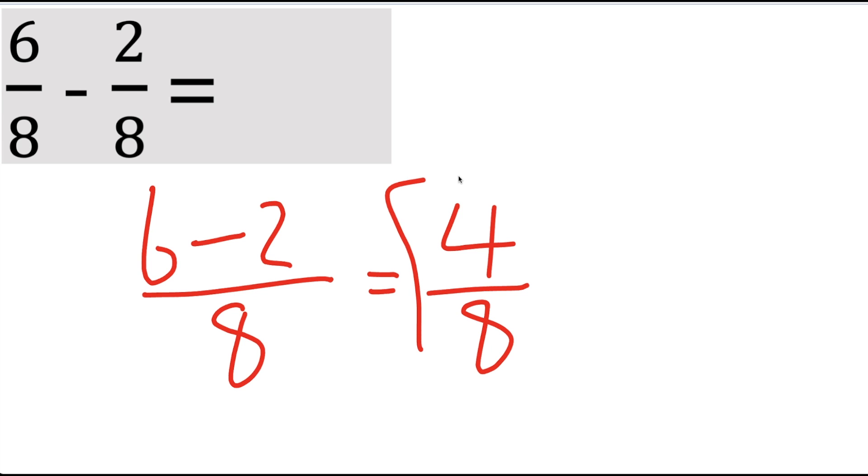This right here is the final answer. But again, we learned about simplifying, and what that means is to make it in more simple terms. So both of these pieces you could divide by 4, and you would still get a whole number. Like 4 divided by 4 is 1, and 8 divided by 4 is 2. And so the answer that is simplified would be 1 half.